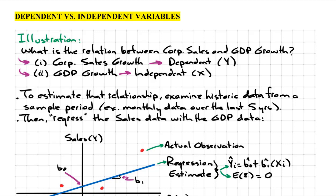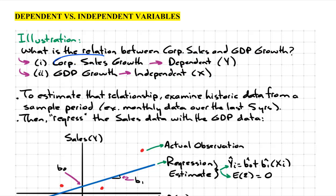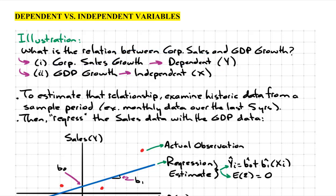Dependent versus independent variables. Let's have a look at an illustration. Suppose we want to know what the relationship is between corporate sales and GDP growth. In this instance, corporate sales growth would be the dependent variable, and GDP growth would be the independent variable. In other words, corporate sales is dependent upon what's happening in the broader economy.